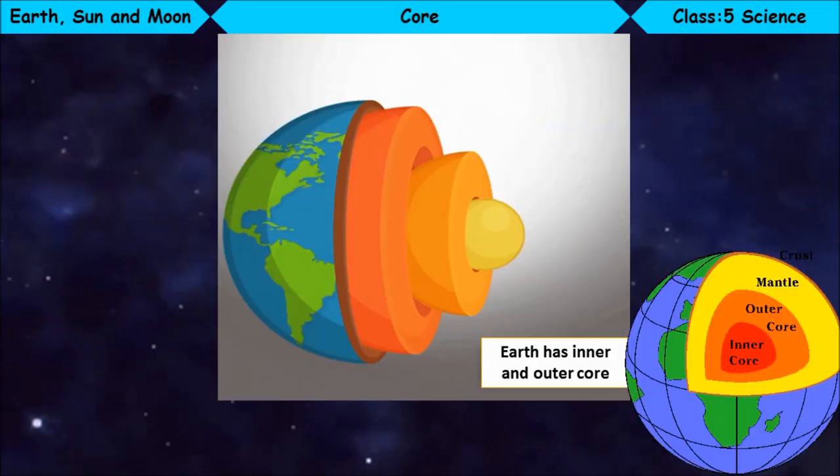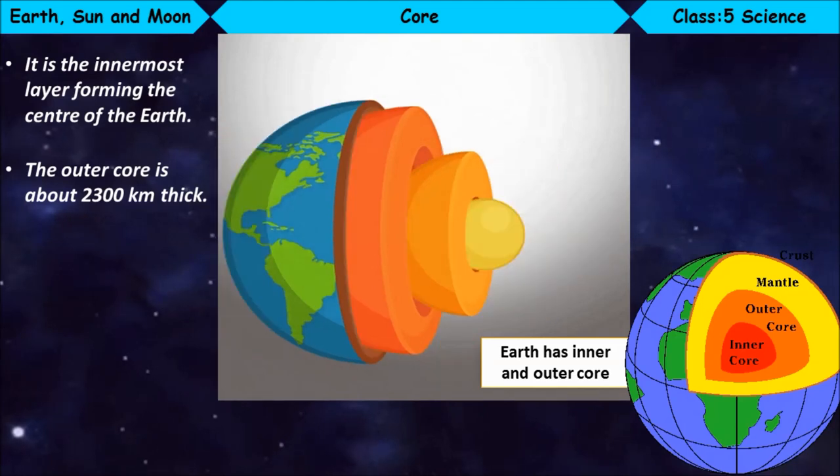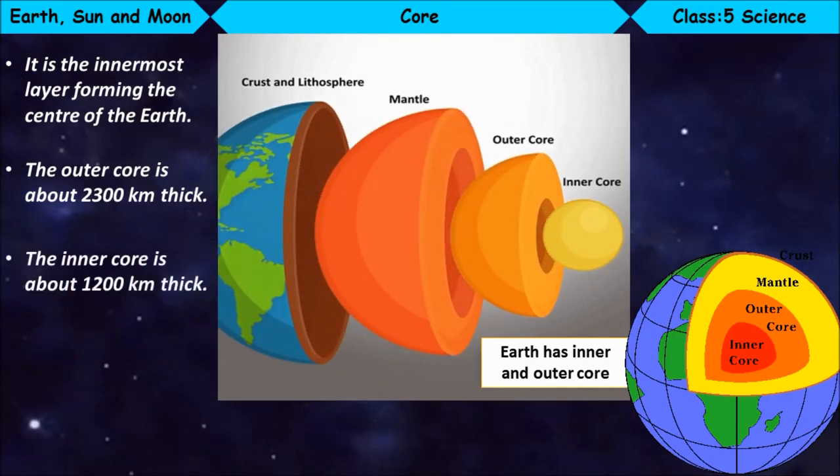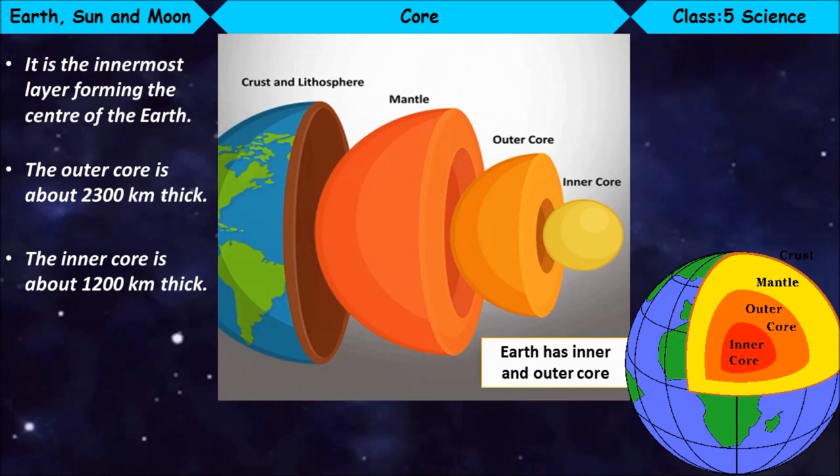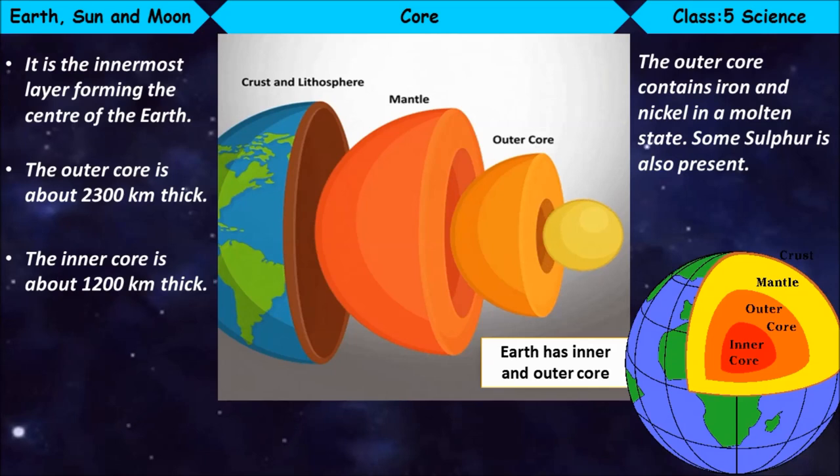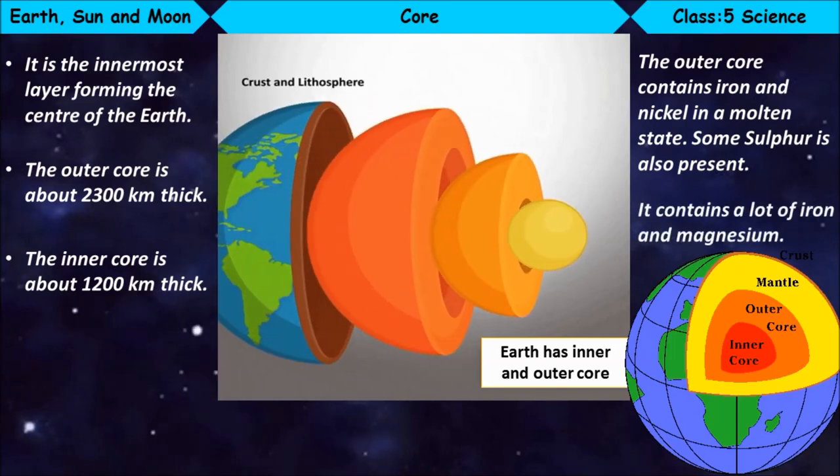Core. It is the innermost layer forming the center of the Earth. The outer core is about 2,300 km thick. The inner core is about 1,200 km thick. The outer core contains iron and nickel in a molten state. Some sulfur is also present. It contains a lot of iron and magnesium.